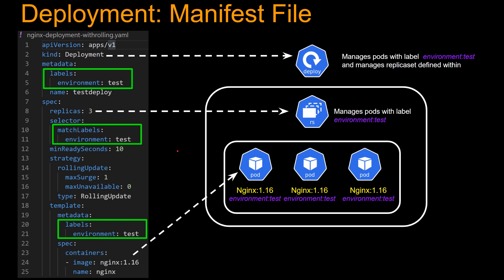So now we talked about how the manifest file works. One thing we haven't seen so far is this section: min ready seconds 10, strategy, rolling update, max surge, max unavailable, and type. We're going to come back to that — just hold off for a couple of minutes.